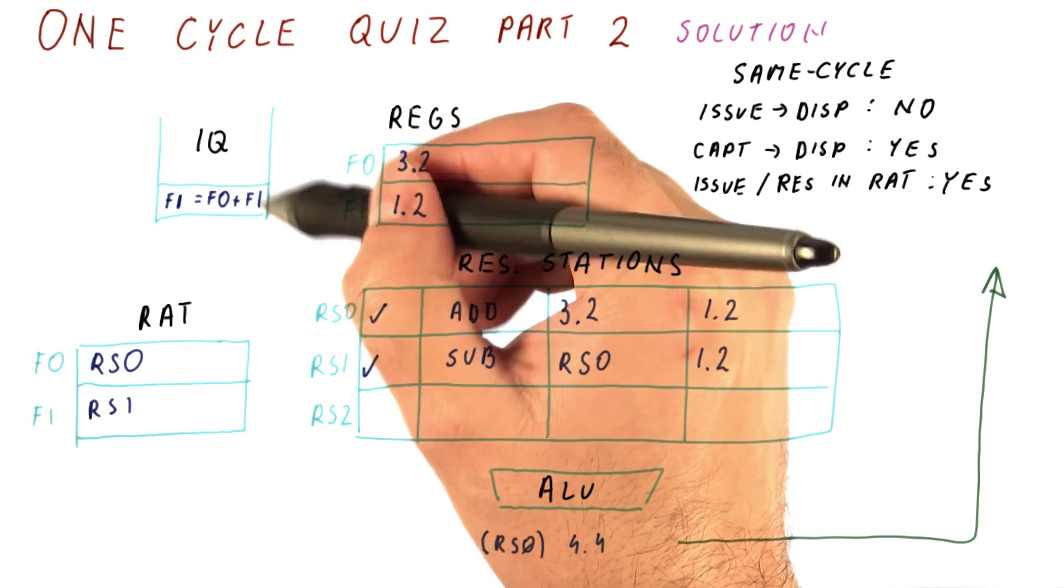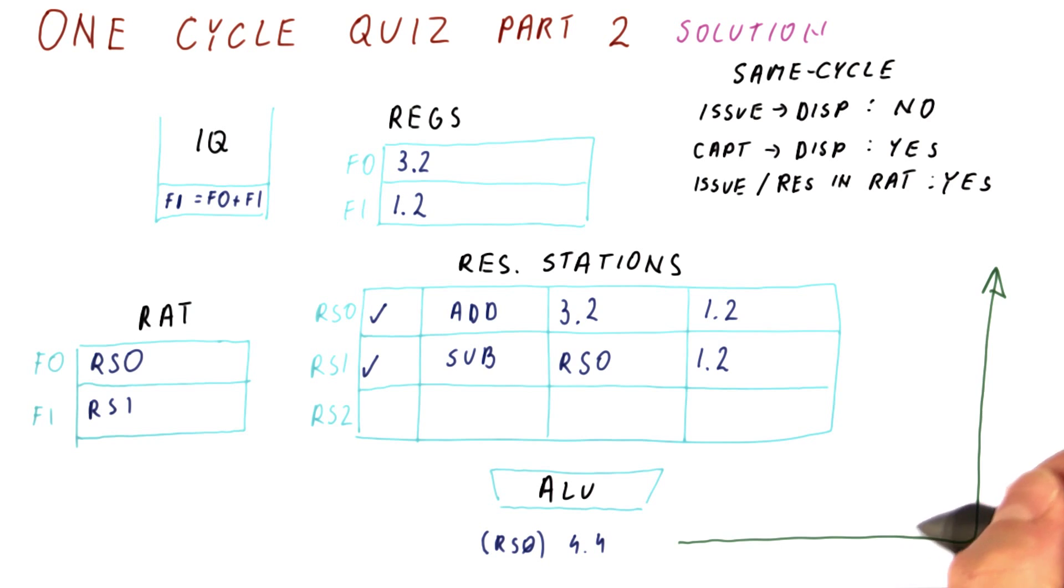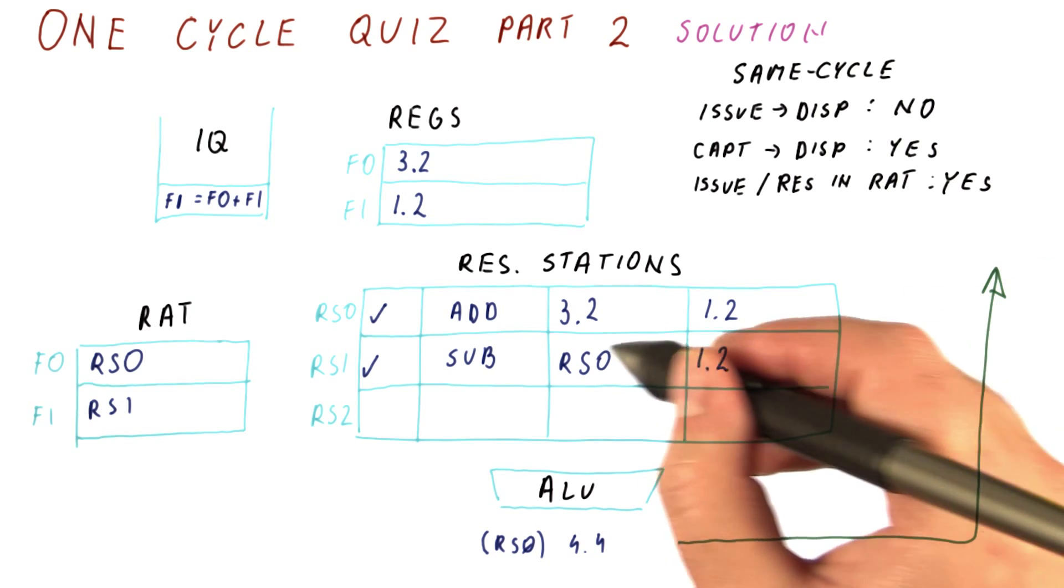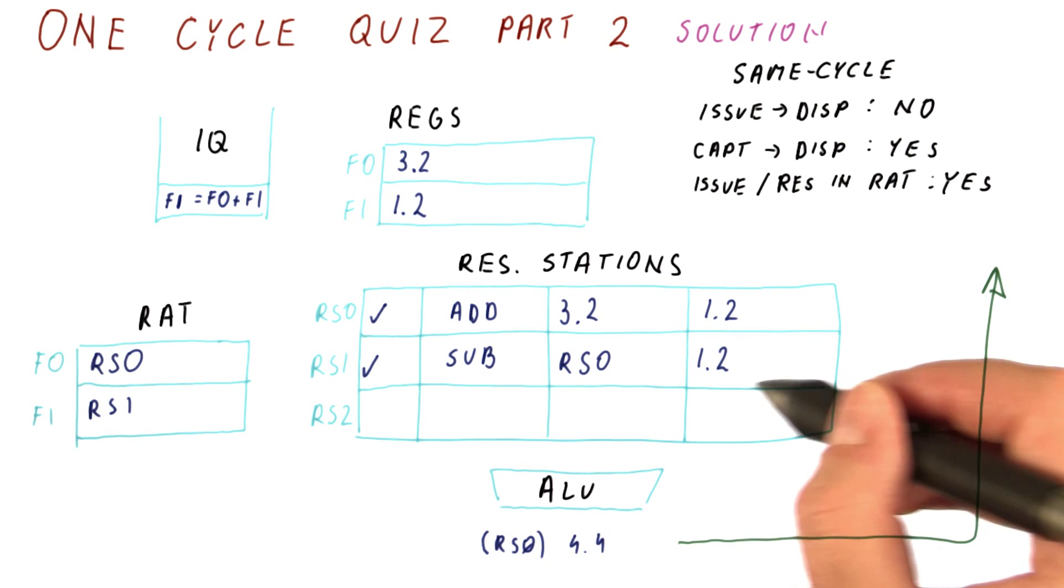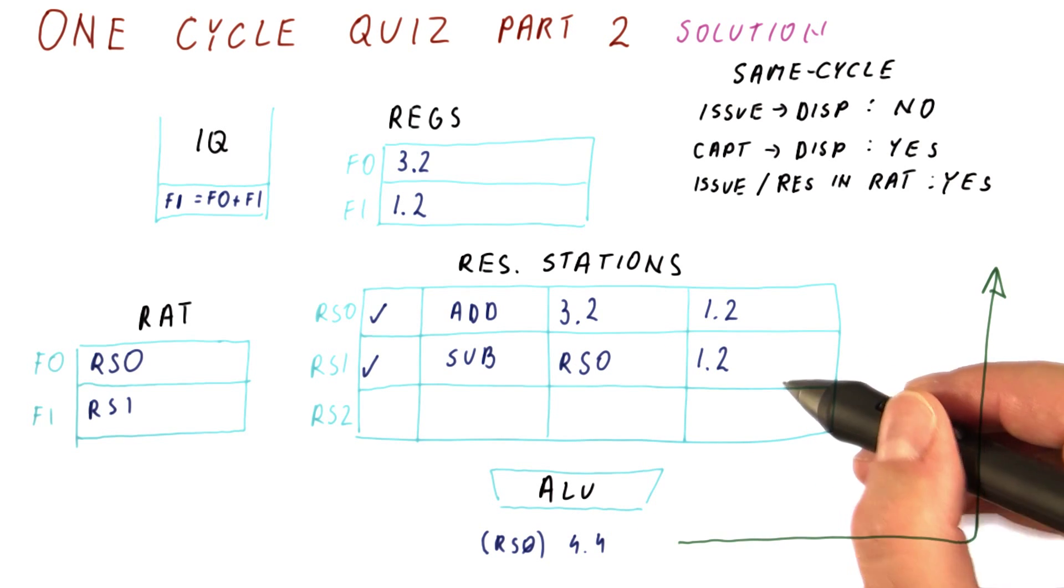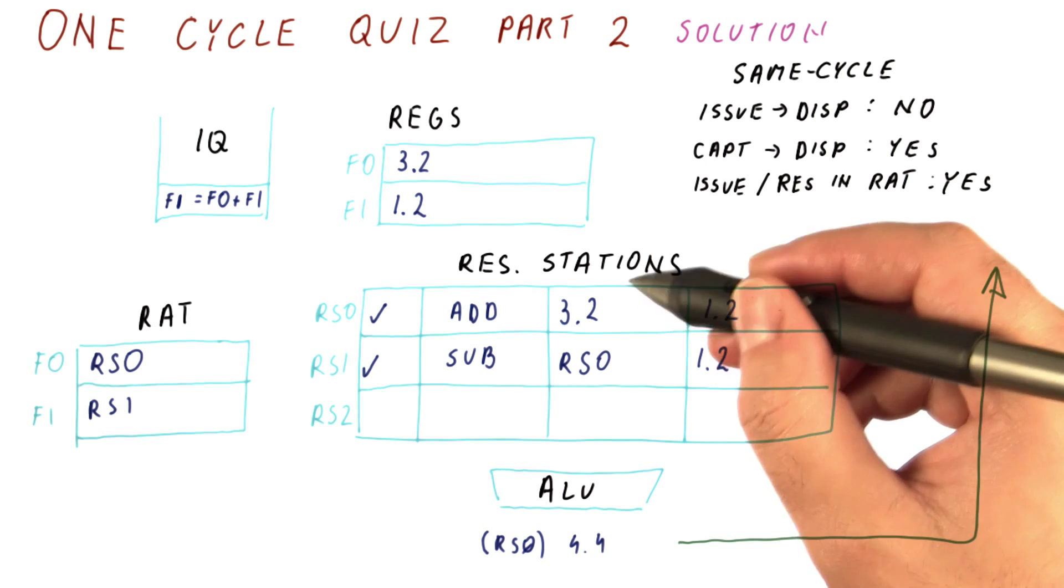So does this instruction issue? What happens to the instruction that is broadcasting its result? And is there any result capturing in the remaining reservation stations? We can do this in any order.